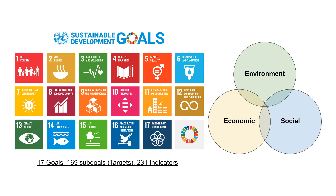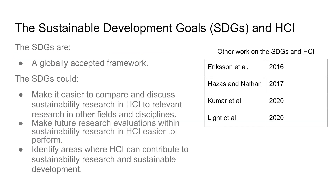Our review attempts to map the work in sustainable HCI to a globally accepted sustainability framework, namely the Sustainable Development Goals. In 2015, all member states of the United Nations adopted the 2030 Agenda for Sustainable Development and the SDGs. The SDGs build on the three pillars of sustainability and consist of 17 different goals with 169 sub-goals called targets and 231 unique indicators. We chose the SDGs since they are a globally accepted framework that could make it easier to compare and discuss sustainability research in HCI to relevant research in other fields, make future research evaluations easier, and be used to identify potential areas where HCI can contribute to sustainability research.